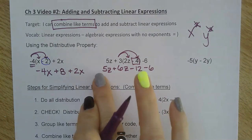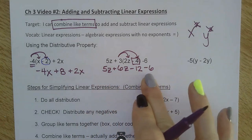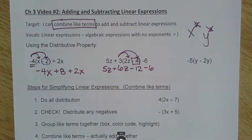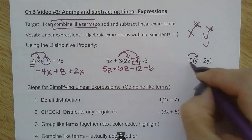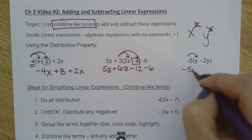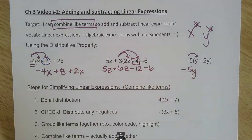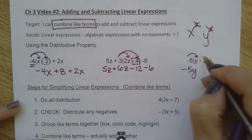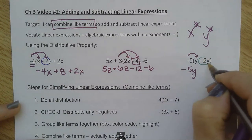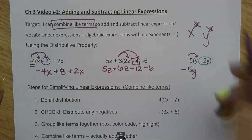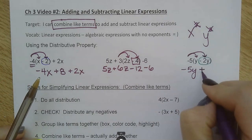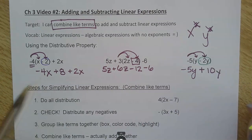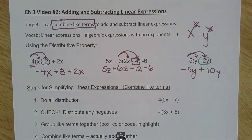Always double check that you've copied everything down correctly before you go on to the next step. Draw my arrows in. Negative five times y, and negative five times negative two y. Negative times a negative is positive ten y. And then you would keep going and combine like terms after that.